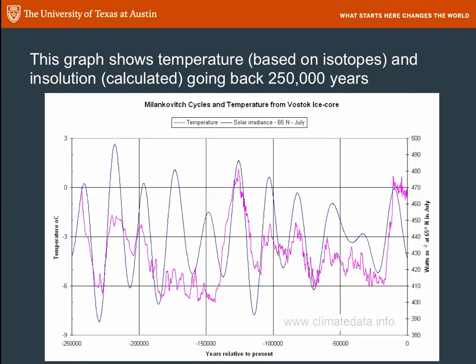So this is a graph that is showing you the temperature calculated from isotopes and the insolation calculated from first principles going back 250,000 years. In this case, today is on our right, and 250,000 years ago is on the left. And you can see how the solar insolation really accounts for the vast majority of the temperature variation on Earth over that time period.